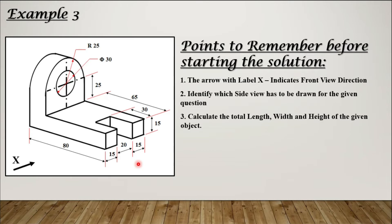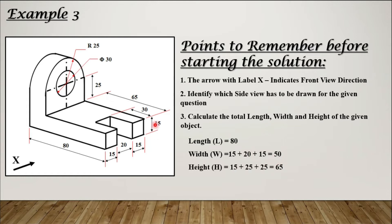Third: calculate the total length, width, and height. The total length is directly given as 80 mm. Width is given in three parts — 15, then 20, then 15 — adding them gives 50 mm. For height: 15 mm from the top surface to the center, 25 mm from center to outer radius, giving 15 + 25 + 25 = 65 mm total height.